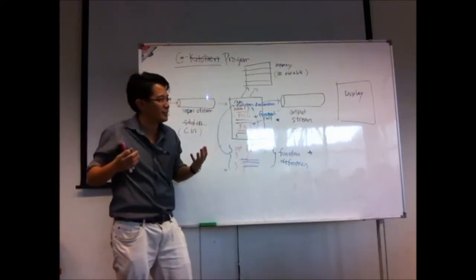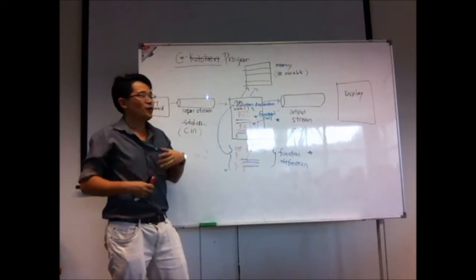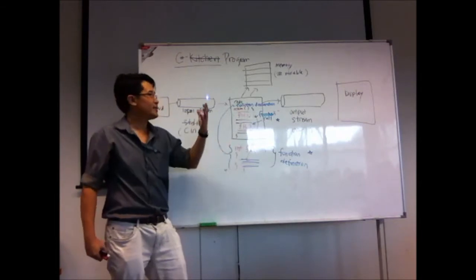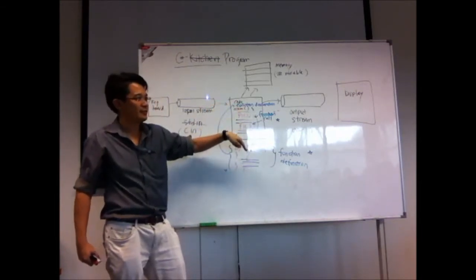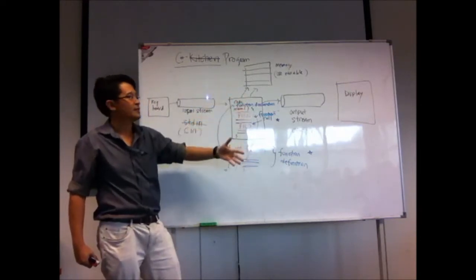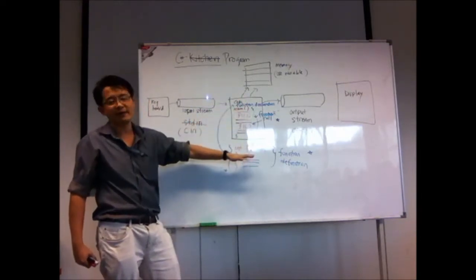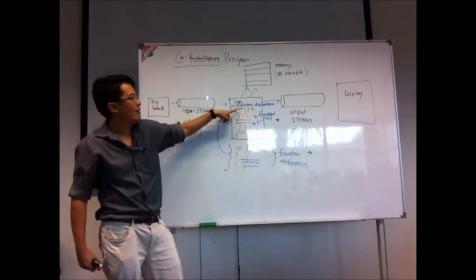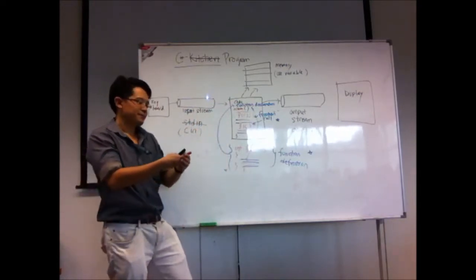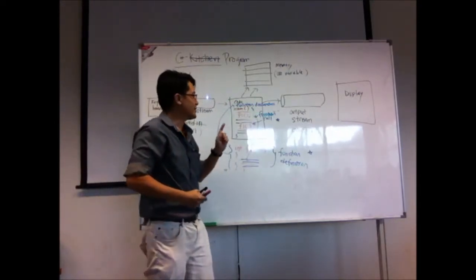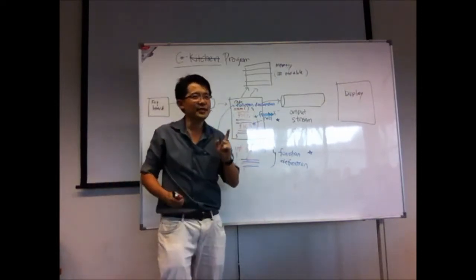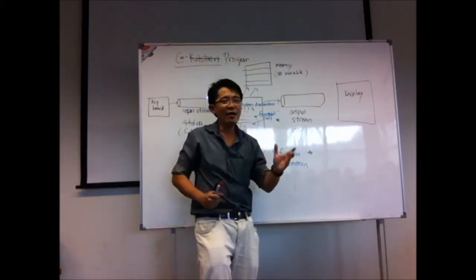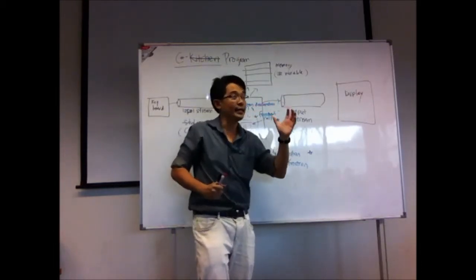Do you know now why the main function is called main? Because it's the function that calls all the other functions. Which function executes first? Main function — the first line in main. From there it will call other functions. Now, have you ever thought about why there's a return statement at the end of the main function? Every function ends with a return statement.